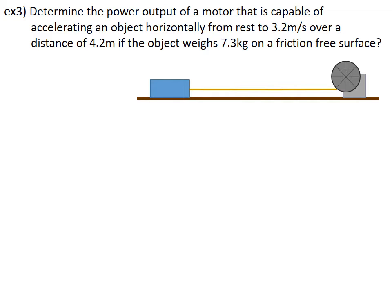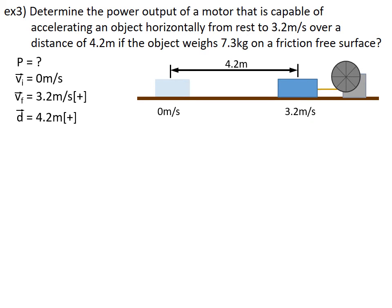Example 3, determine the power output of a motor that is capable of accelerating an object horizontally from rest to 3.2 meters per second over a distance of 4.2 meters if the object weighs 7.3 kilograms on a friction free surface.